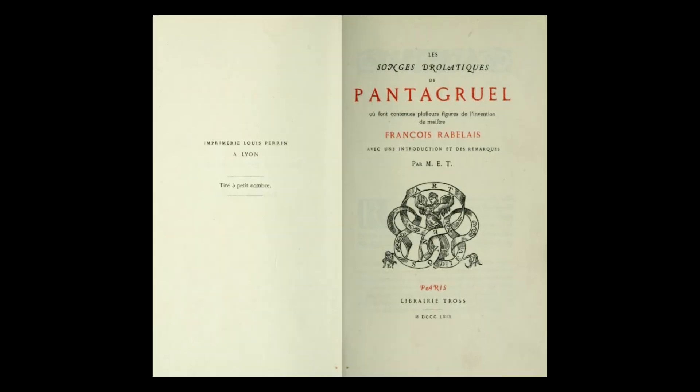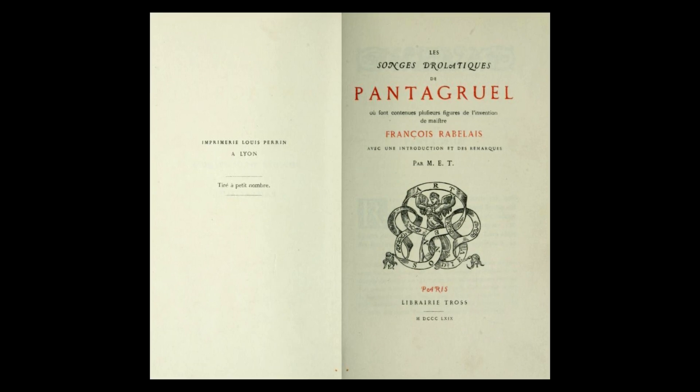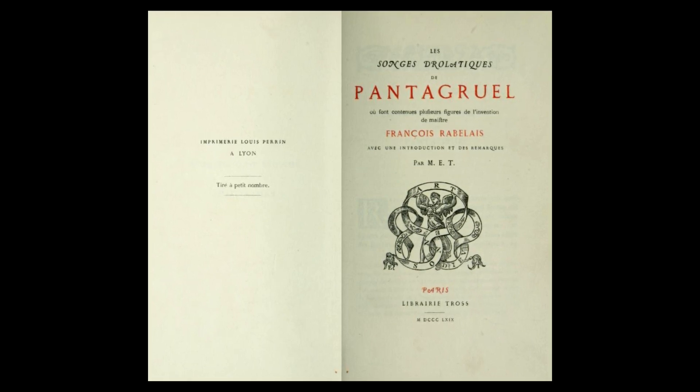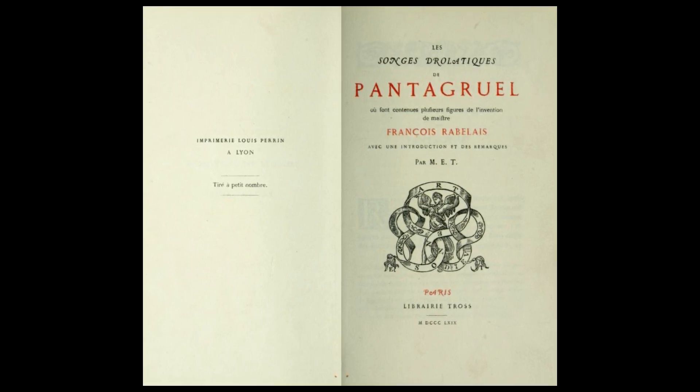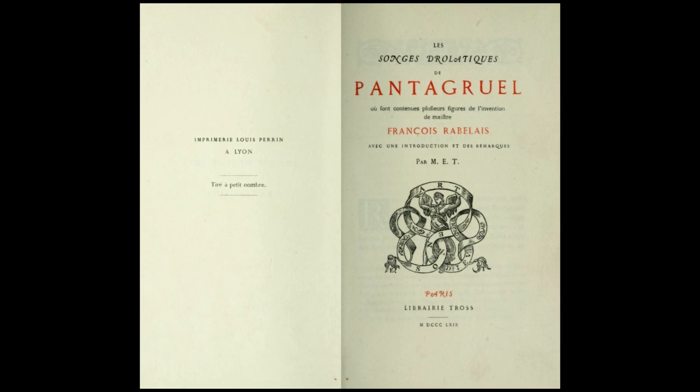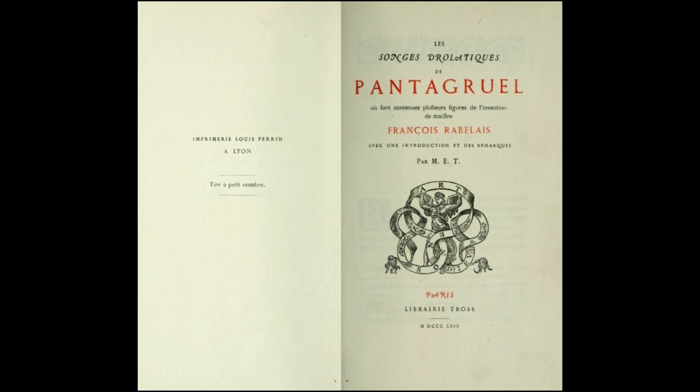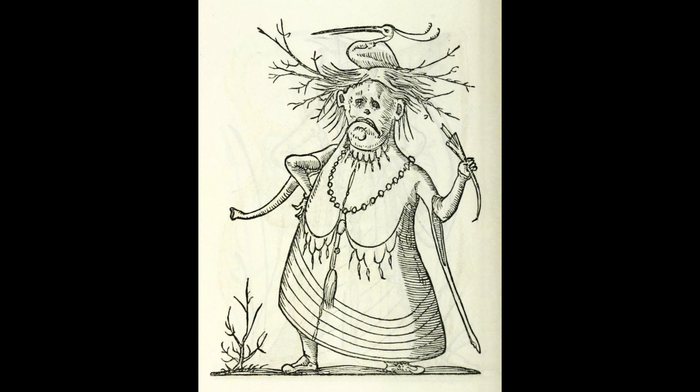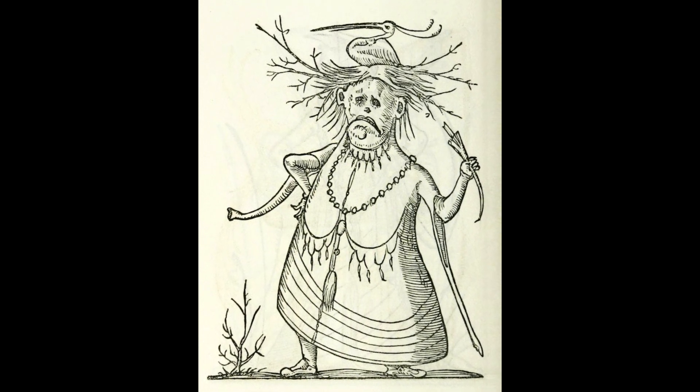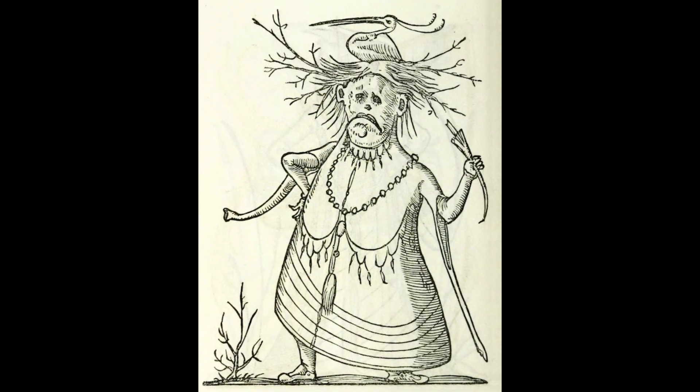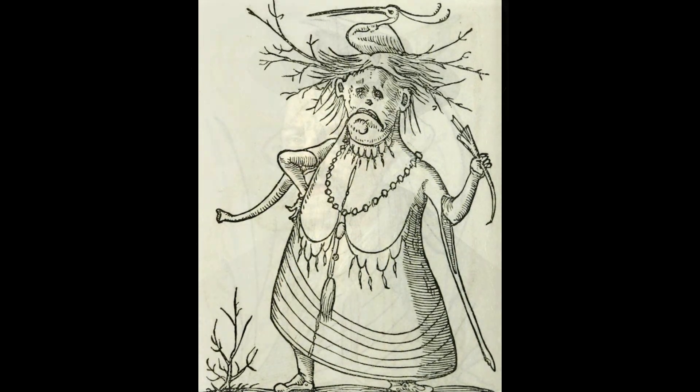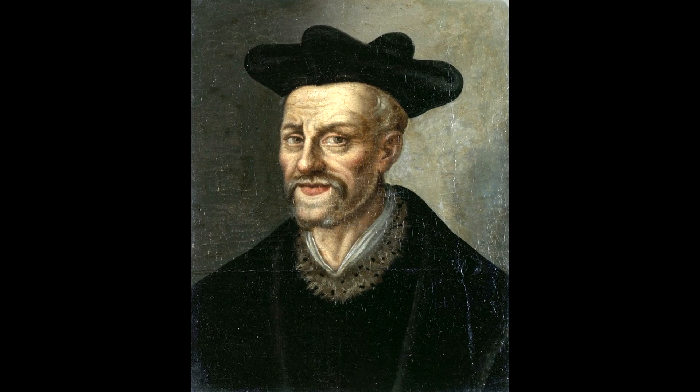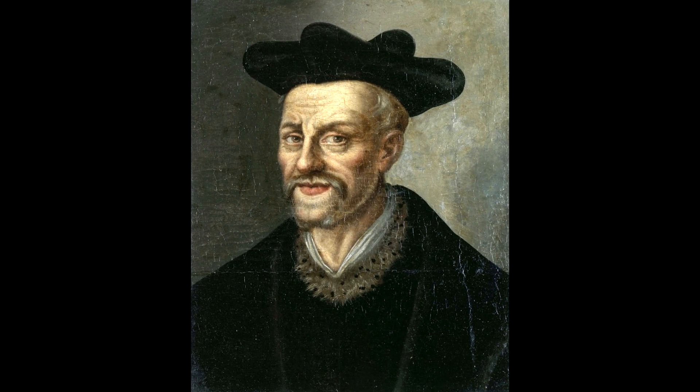The Drolatic Dreams of Pantagruel. A bit of a different sort of cryptogram here, as this is more of an art history mystery than a code or an indecipherable language. The puzzle here is more about what the images were meant to represent and say metaphorically rather than how to translate them into words. The publisher was Richard Breton, an illustrator and bookbinder from France. The book was published in 1565, and features 120 pages of woodcut images, each of highly stylized creatures or beings in a variety of clothes, poses, and scenes.